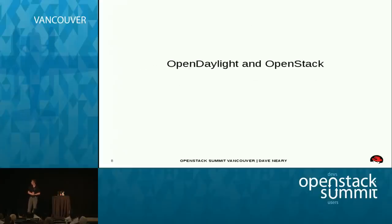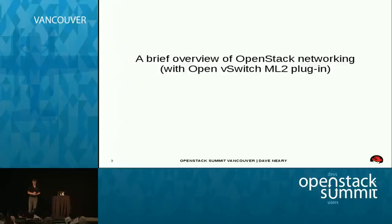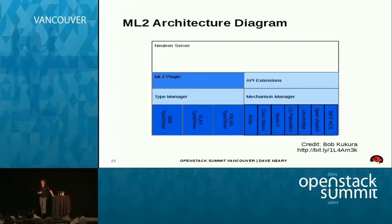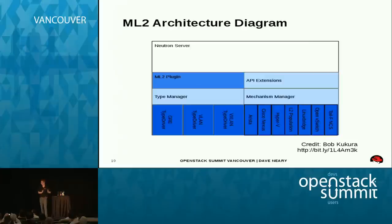So, OpenDaylight and OpenStack. To start with, a brief overview of how OpenStack works with just the Open vSwitch ML2 plugin. Essentially the ML2 mechanism replaced the Neutron plugin architecture. The modular layer two plugin defines the tunnel type between hosts — which can be VLAN, VXLAN, or GRE — and the mechanism manager. There are multiple mechanisms; OpenDaylight is one of them. This is a way for Neutron to delegate certain operations to third parties.